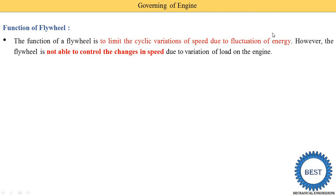The flywheel reduces the fluctuation of energy because it stores and retrieves energy. However, the flywheel is not able to control the change in speed due to the variation of load on the engine. So what is the variation of load on the engine? What is the meaning of that?